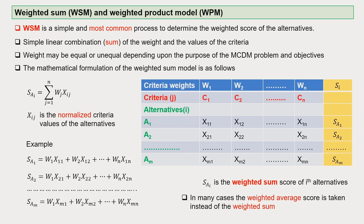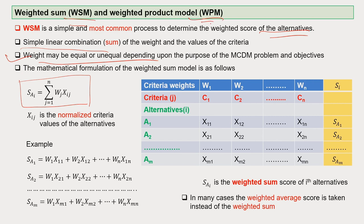WSM — the Weighted Sum Method, or Weighted Sum Product Model — how does it work? WSM is a very simple and most common process to determine the weighted score of alternatives. We largely use linear combinations of the weights and the values of the various criteria. The weights given may be equal or unequal depending upon the purpose of the MCDM being used. The formula is: SAi = summation over J from 1 to N of Wj times Xij.